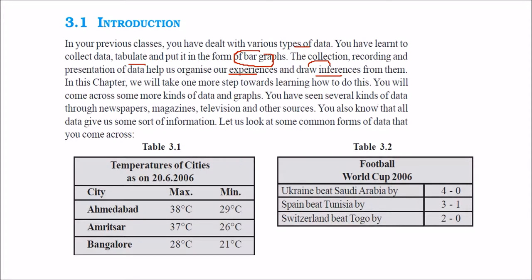We'll take a step forward here and see more data and graphs. Data can be collected from newspapers, magazines, television, and various other sources. The information that data gives us comes when data is converted into information by organizing it properly.